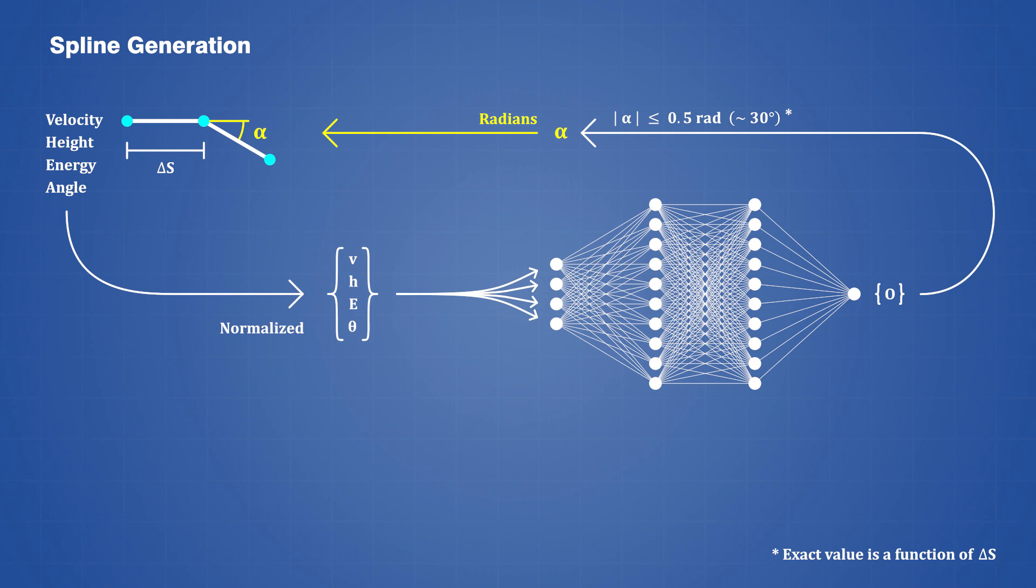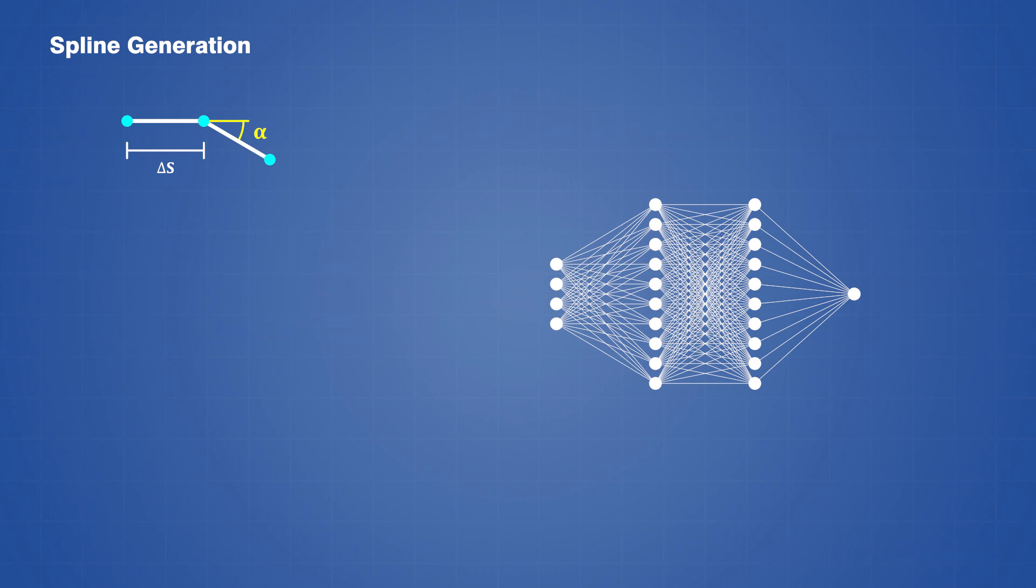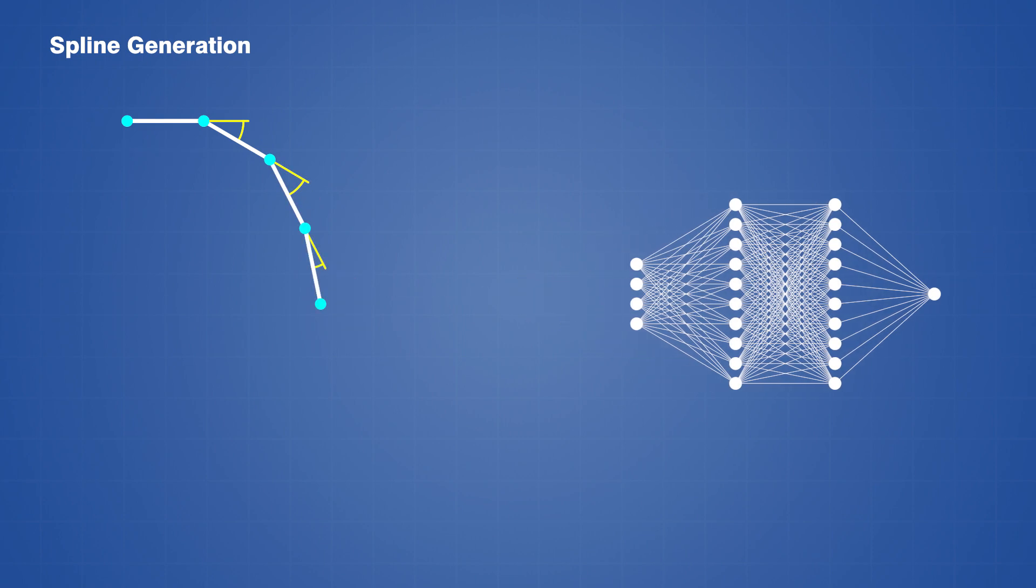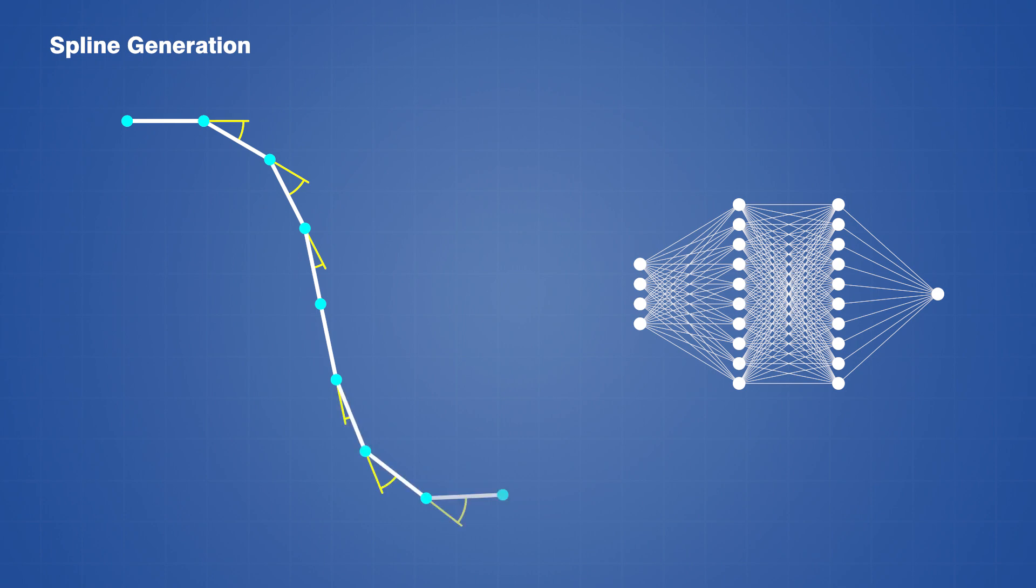Using the angle and segment length, we can now use a bit of geometry and physics to find the velocity, height, and energy at the subsequent node, which we can then normalize again, and send back through the same neural network to get a new angle for the next segment. The same process is repeated over and over until the track spline reaches a certain length, or until the rollercoaster runs out of energy.